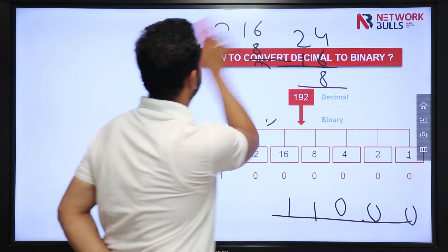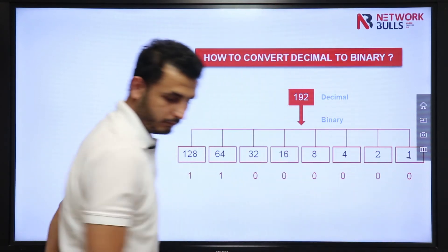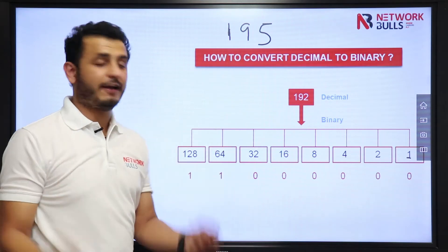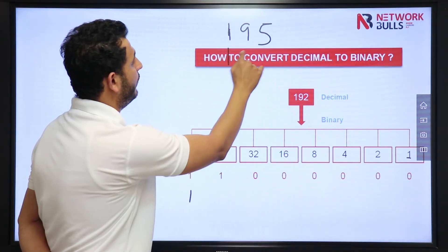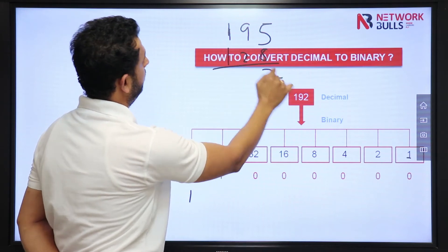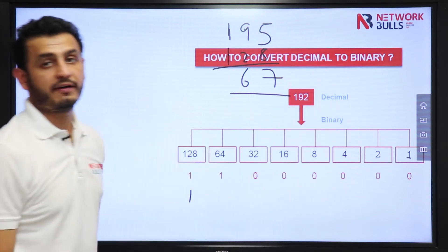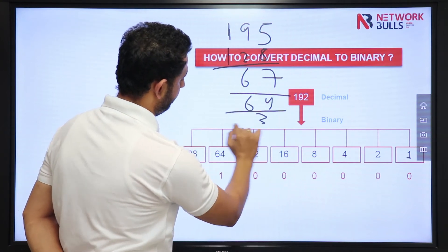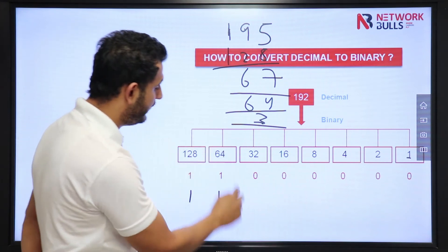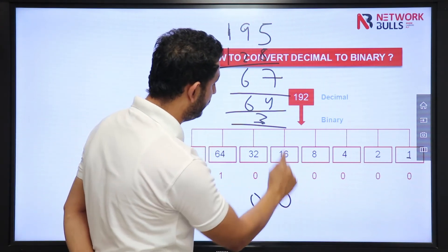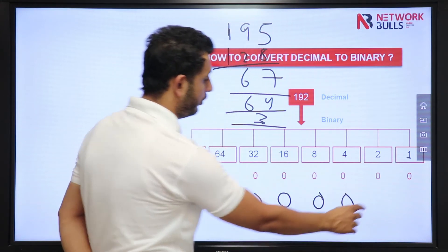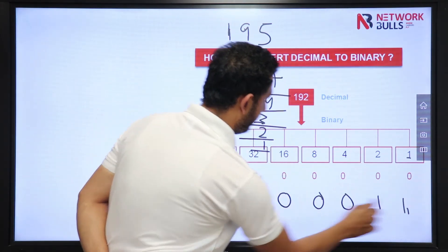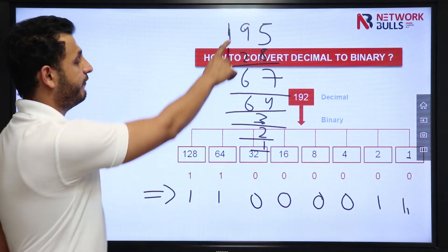Let's take one more example — number 195. For 195 do you need 128? Yes — subtract the value. Now for 67 do you need 64? Yes — subtract it. The value left is 3. For 3 do you need 32? No. 16? No. 8? No. 4? No. 2? Yes. Left is 1, and I need 1. So this will be the binary representation of the number 195.